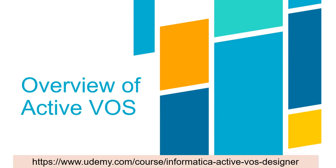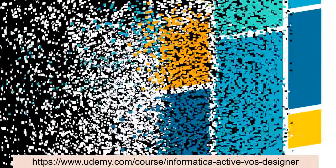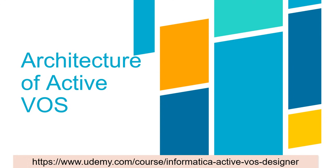We will have an overview of Activos and then learn several terminologies such as what is an activity, what is an abstract process, what is BPEL, partner links, and my role. After understanding these terminologies, we will explore the architecture of Activos and where it fits in the Informatica master data management ecosystem.